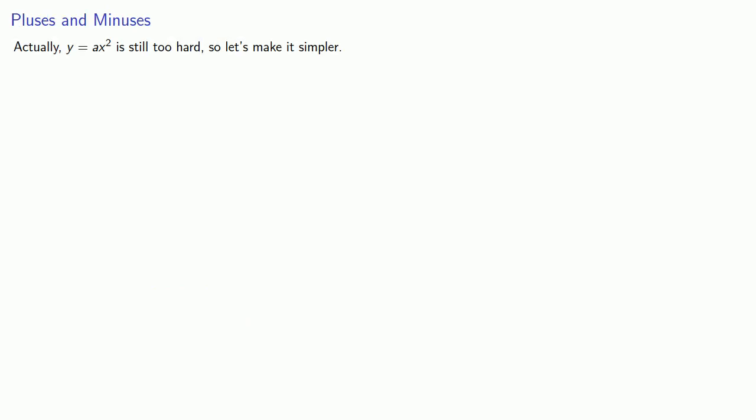Actually, y equals ax squared is still too hard, so let's make it simpler. Now at this point we do have to be a little bit careful. We could pick a specific value for a, y equals 389x squared.